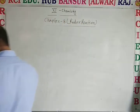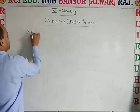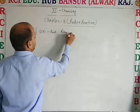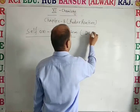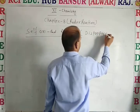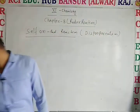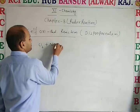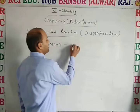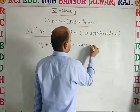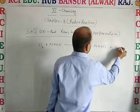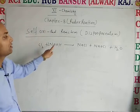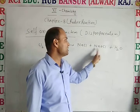Here is an example of a self-oxidation reduction reaction, also called a disproportionation reaction. Cl₂ reacts with NaOH to form NaCl plus NaOCl plus H₂O.